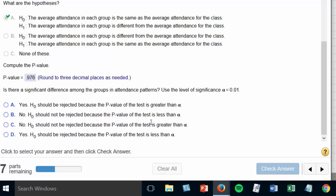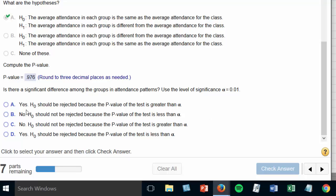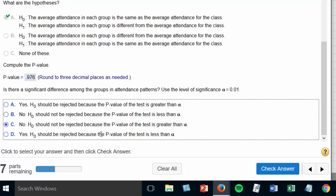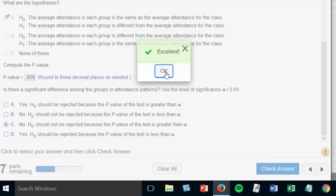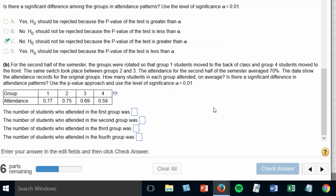Okay. Is there a significant difference among the groups? At a p-value of .976 we are not able to reject the null hypothesis. So if I can't reject the null hypothesis then I can't conclude that there's a difference between the groups and the average. So the correct answer here is C. No, the null hypothesis should not be rejected because the p-value of the test is greater than alpha, the level of significance.